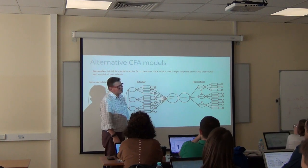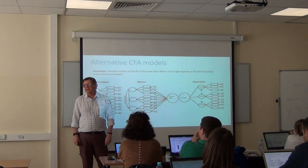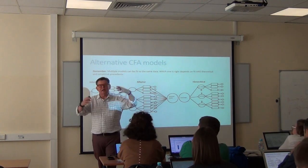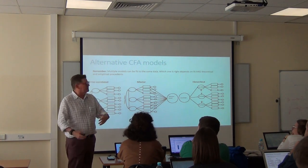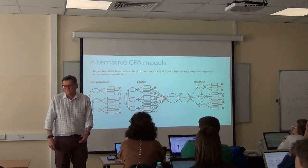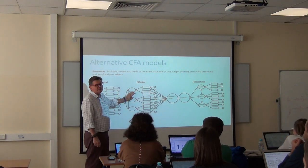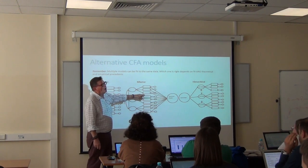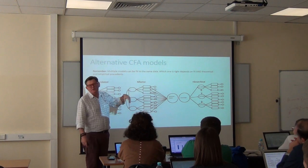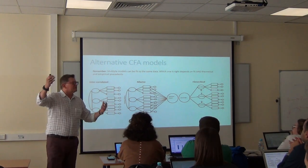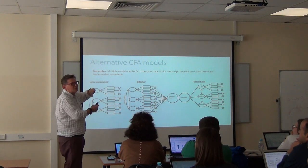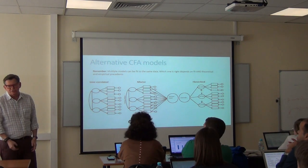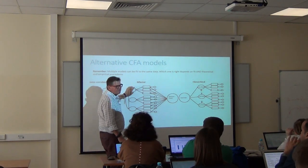The bi-factor model says that two things explain every item: the common factor — everything is about assessment, mathematics, or whatever — and different facets or sub-factors we call unique factors. So these are like sub-scores: yes, everything is math, but these ones are geometry, these are algebra, these are calculations, these are statistics. They're sub-factors within the general.